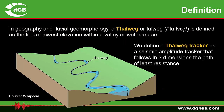Let's start with a definition. In geography and fluvial geomorphology, thalweg is defined as the line of lowest elevation within a valley or watercourse. Thalweg is a German term — 'tal' means valley and 'weg' is path, so the literal translation would be a valley path. The thalweg is trying to find the path of lowest resistance when water flows through the valley, and that is the analog we use when we describe a thalweg tracker.